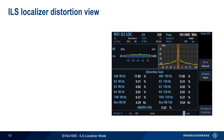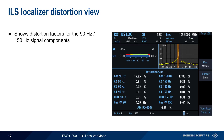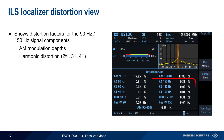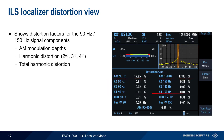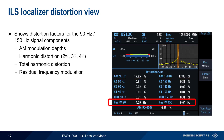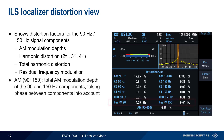The localizer distortion view shows the distortion factors for the 90 and 150 Hz signal components. These include the AM modulation depth for each lobe, the harmonic distortion for the 2nd, 3rd, and 4th harmonics, the total harmonic distortion (THD), and any residual frequency modulation. The parameter AM90+150 refers to the combined AM modulation depth of both lobes, taking into account the phase difference between them.